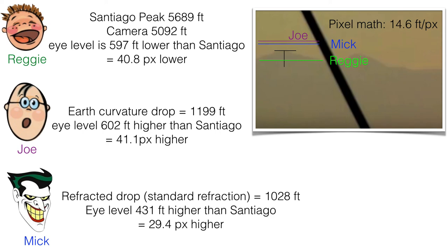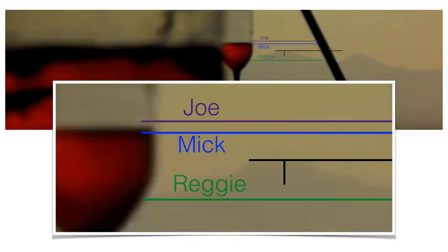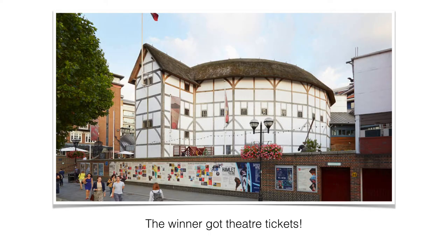So who won the bet? Let's show the full image. So there's the mountains. There's the water level. Who won the bet? Here's the zoomed in view and the winner got theater tickets.